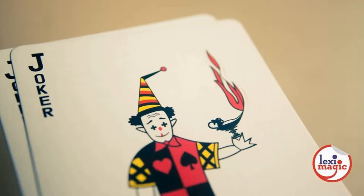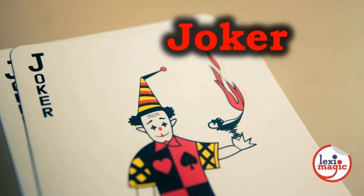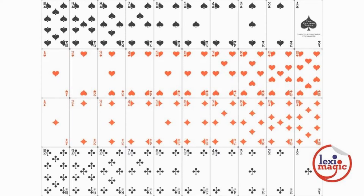One or two jokers are usually added to each deck and are used as wild cards in many games. Except for face cards, the number of pips on the rest of the cards represent the value of that card. For example, the four of diamonds has four diamonds or pips that represent its value.